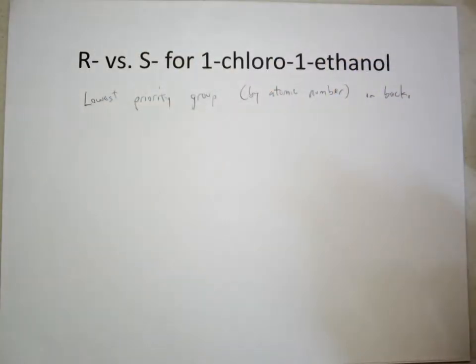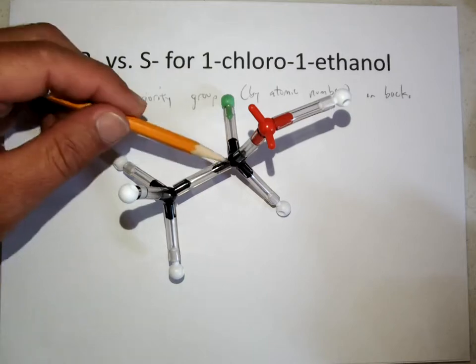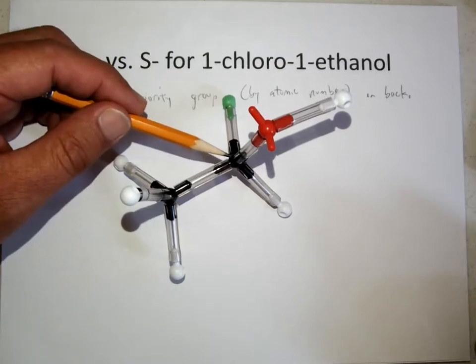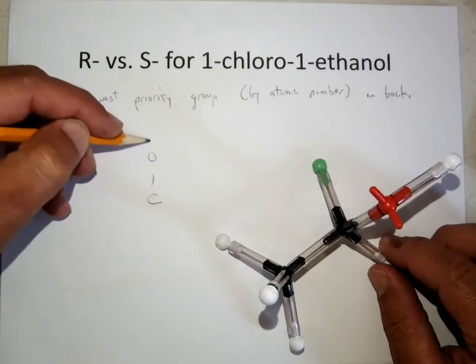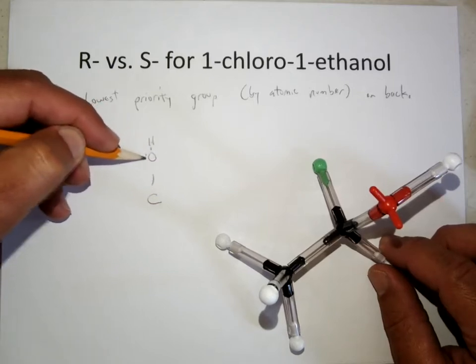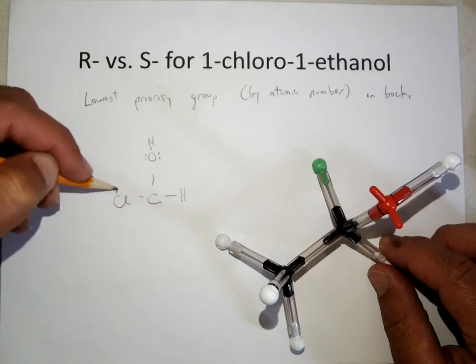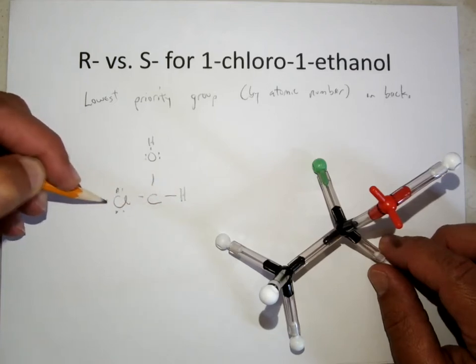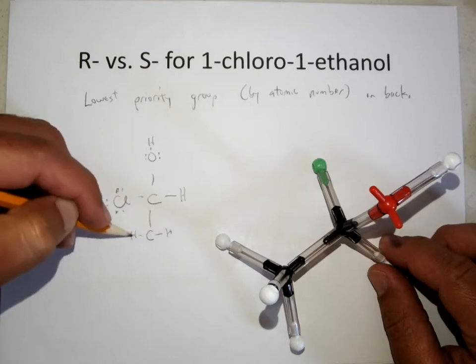So if you have a molecule like this and there's a chiral carbon, you identify the priorities of the groups. So we have the carbon, it has an OH on it, it has a hydrogen on it, it has a chlorine on it, and it's got a methyl group on it. So four different groups.